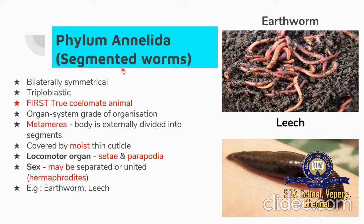Next Phylum is Annelida, known as segmented worms. They are bilaterally symmetrical and triploblastic with three layers. They are the first true coelomate animals with organ system grade of organization. Metameric segmentation means the body is externally divided into segments, covered by a moist thin cuticle. Locomotory organs are setae and parapodia. Sexes may be separate or united as hermaphrodites. Best examples: earthworm and leech.